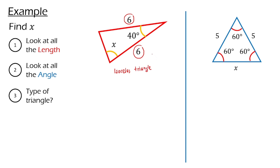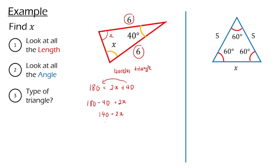We know that in an isosceles triangle, the bottom angles will have the same angle. With the information that the sum of internal angles of a triangle is 180, so 180 equals 2x plus 40. Then we move 40 to the other side: 180 minus 40 equals 2x. So 180 minus 40 gives 140 degrees. Dividing by 2, we find that x is 70 degrees — as simple as that.